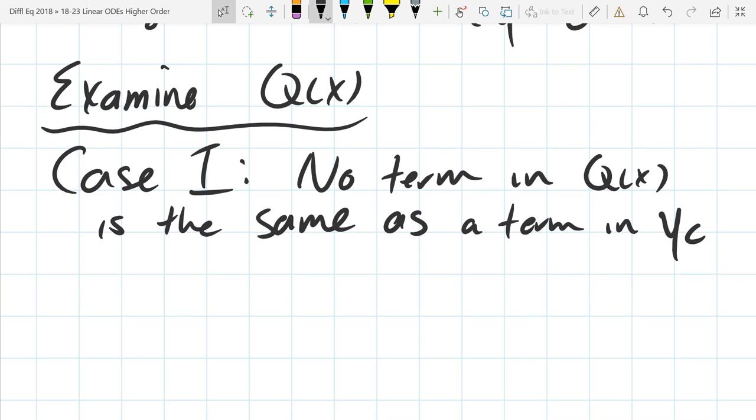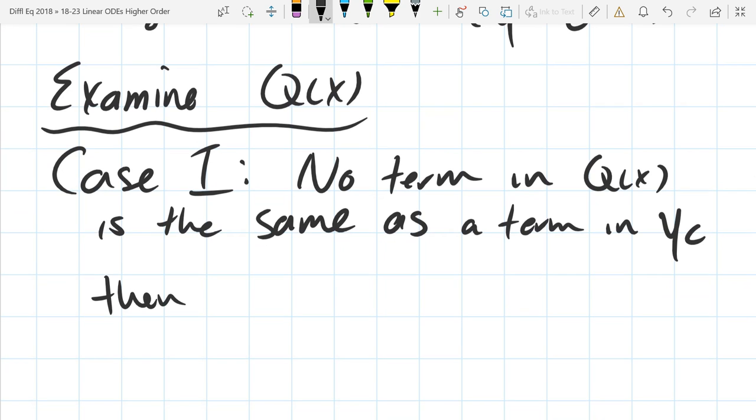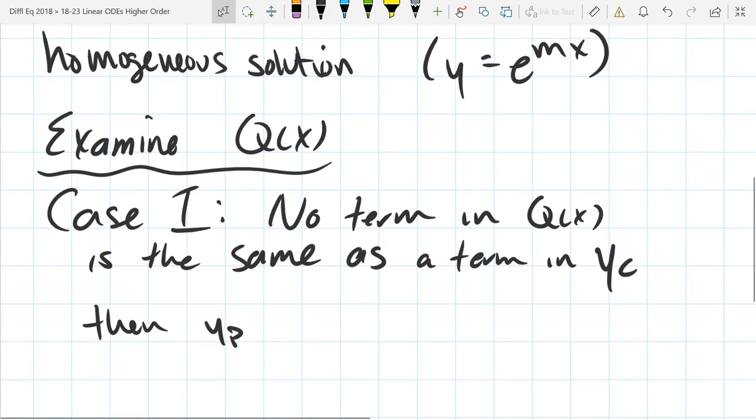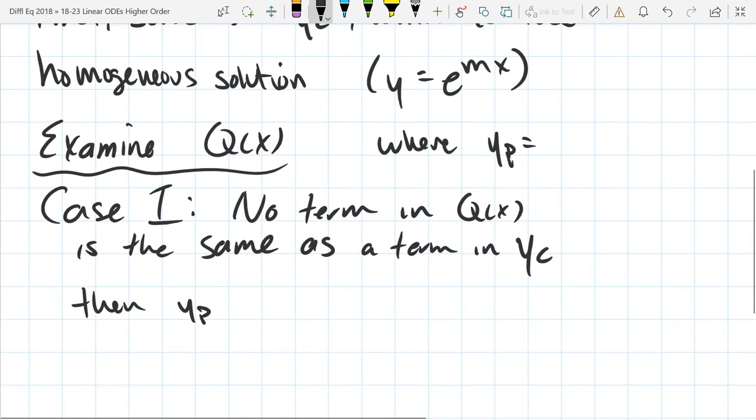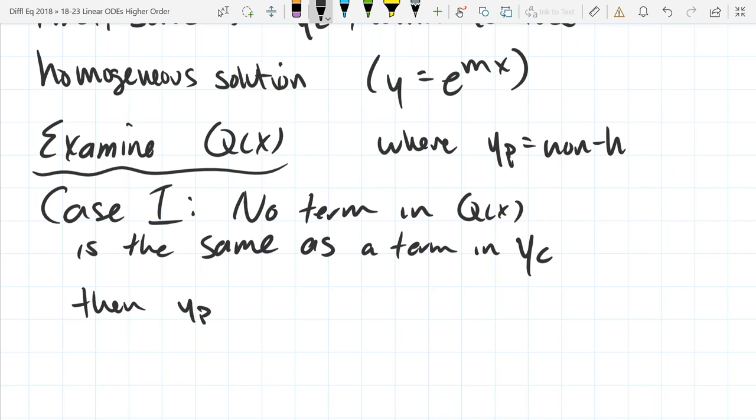So if this is the case, then YP, so I should write down what YP means. YP is the non-homogeneous solution. In this case, YP is a linear combination of all the terms in QX and all of their derivatives.